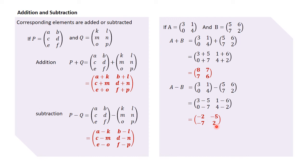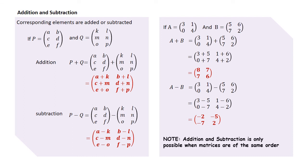What has been noticed in the examples is that addition and subtraction is only possible when matrices are of the same order. If matrices are not of the same order, we cannot have corresponding elements, because we don't have elements positioned in the same way in the two matrices — simply because matrices do not have the same number of rows and the same number of columns. So addition and subtraction is only possible if and only if the matrices are of the same order.